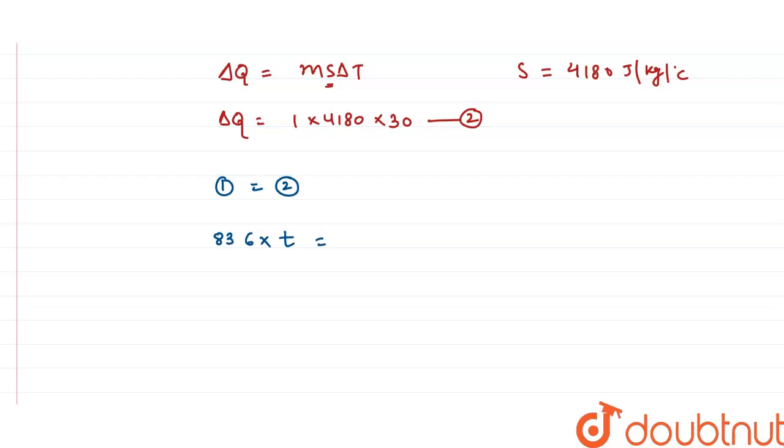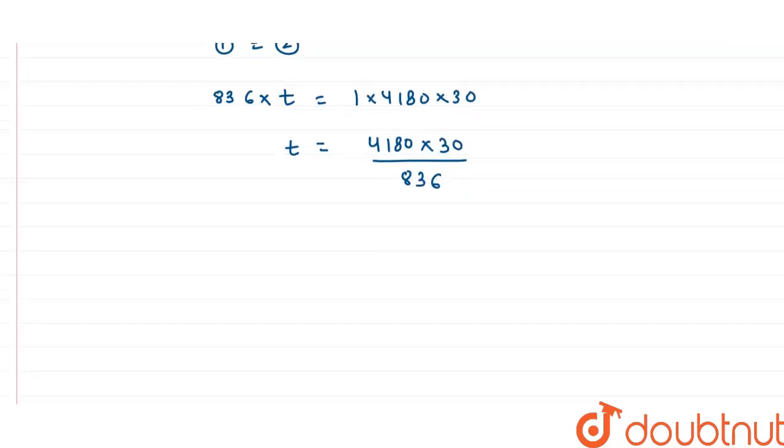So I can write 836 into t equals delta Q which is 1 into 4180 into 30. Now from here, the time can be written as 4180 into 30 upon 836. After simplifying this, I have the value of t coming out to be 150 seconds.